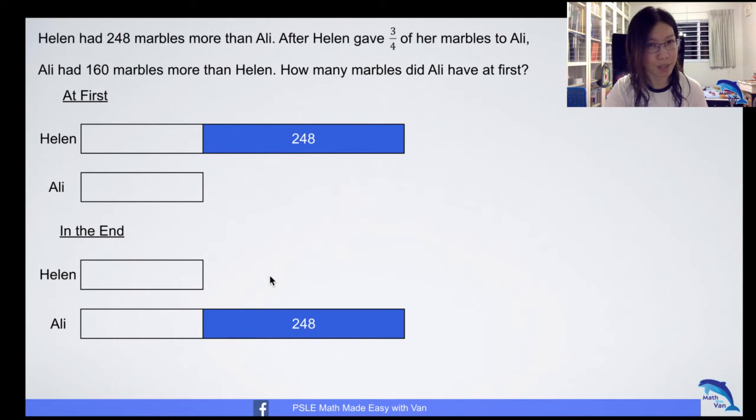Is this what the question says? No, because the question says Ali only had 160. And what does it mean? It means that Helen did not give more than 248. In fact, she gave less. This is how you understand the question - you know the implication of a so-called cause and effect.